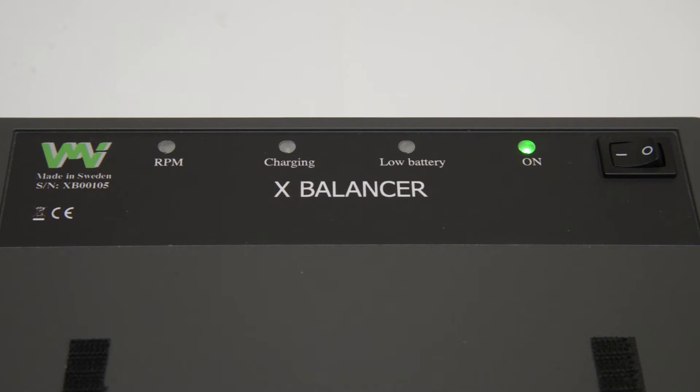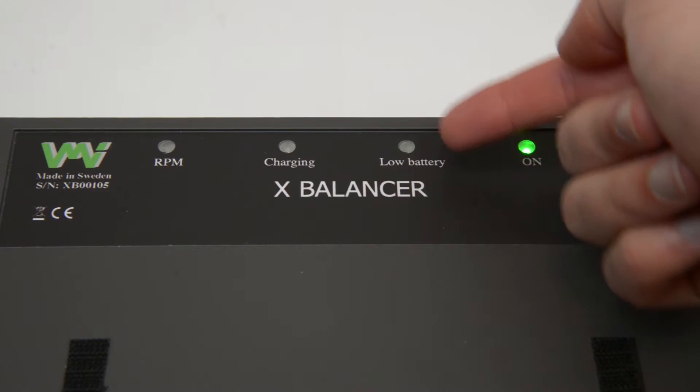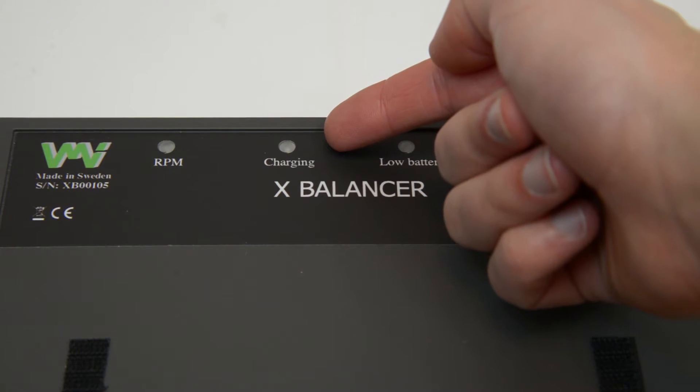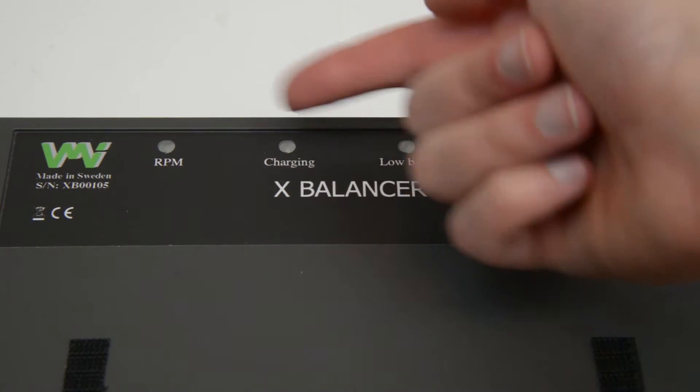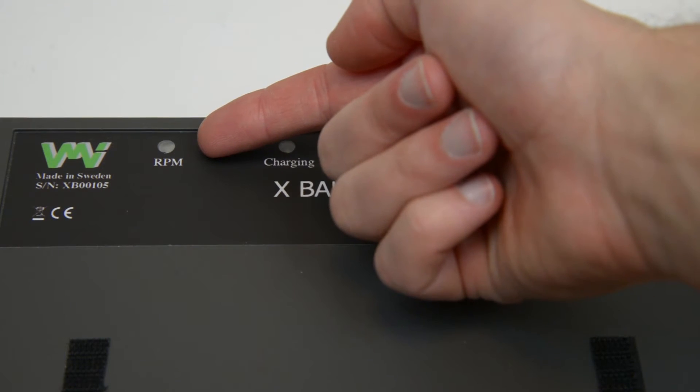There are a total of four LED lights on the front side of the X-Balancer. The already mentioned green LED, the red LED which indicates that the battery is low, the blue that lights when your device is charging, and the yellow which lights once per cycle when the rotation of the machine is detected.